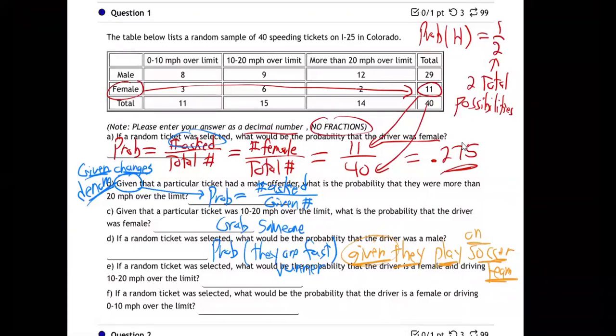That's just true — that's not some math trick. When you're given something, that changes the field from which you're pulling. It changes the denominator because it changes the possibilities. You're getting a soccer person, not just any old person.